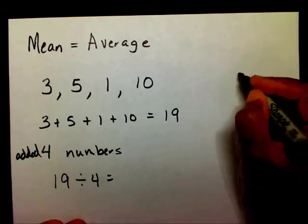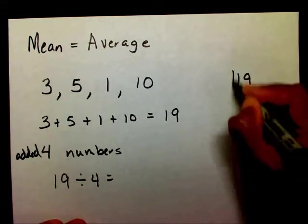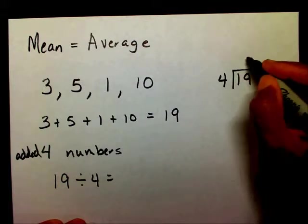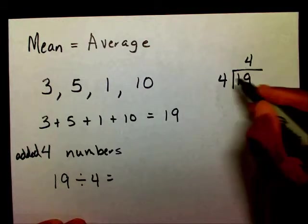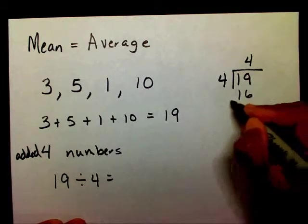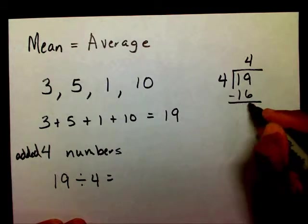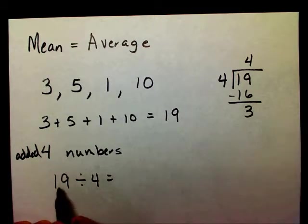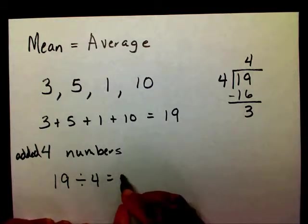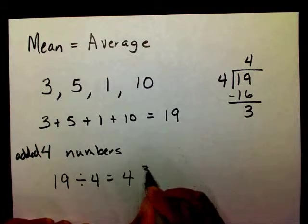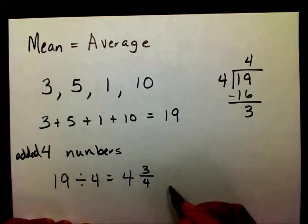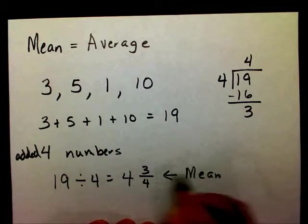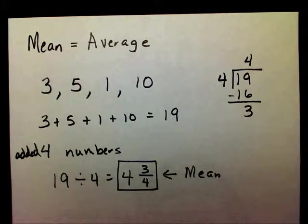Since I added 4 numbers and my sum is 19, I need to now say 19 divided by 4. So I'm going to divide 19 divided by 4. Well, 19 divided by 4 will go in there 4 times. 4 times 4 is 16, leave a remainder of 3. So 19 divided by 4 is 4 and 3 fourths. So therefore, this is my mean.